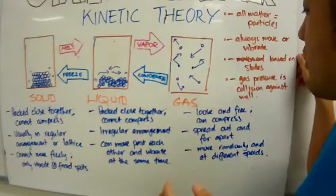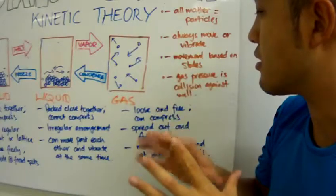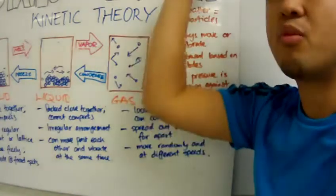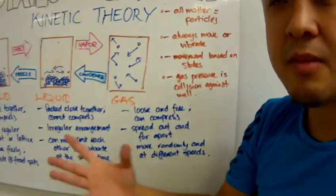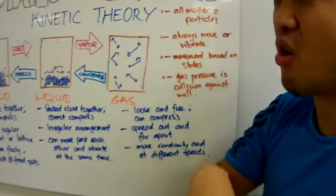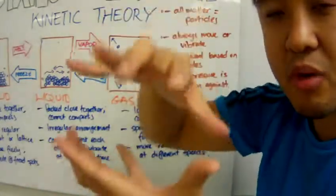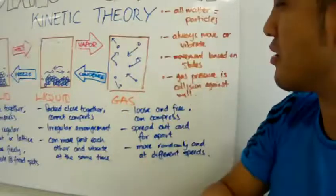Now when we talk about particles in a gaseous state, these particles are just everywhere. They're loose and free, they're everywhere, moving around the container at random speeds and random direction. And because they're all free and loose, and they're spread out, very spread out, that means you can compress gas. You can compress them because they're everywhere.